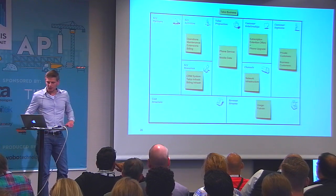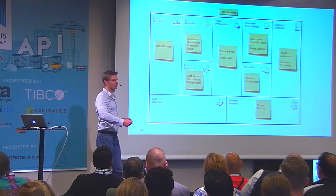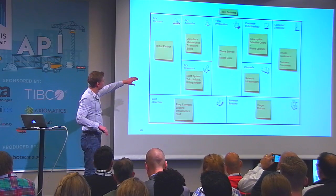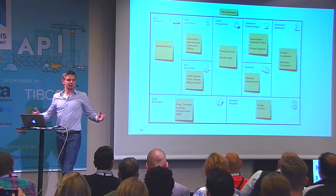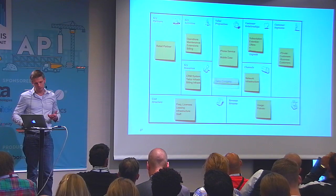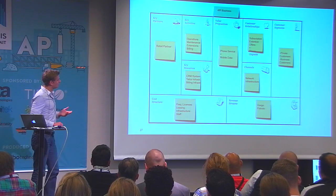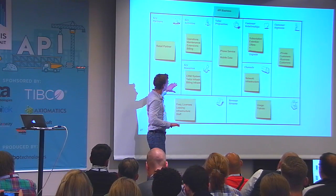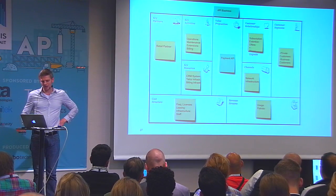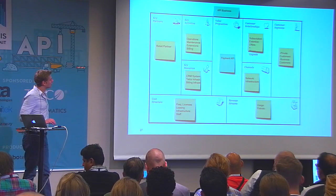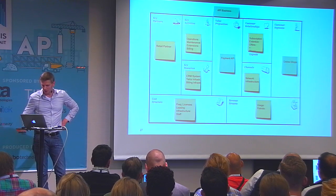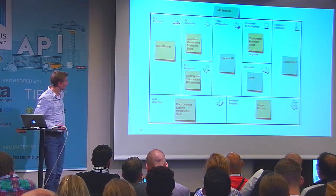Key partners include retail partners where customers can buy phones. Costs come from all those resources and activities. Now you've modeled your business as it is today. The next step is changing it to an API business — leaving as many elements as possible and changing a few. Start with the value proposition: instead of phone service and mobile data, the telco company now provides a payment API. You sell this payment API to online shops, you deliver it via HTTP.